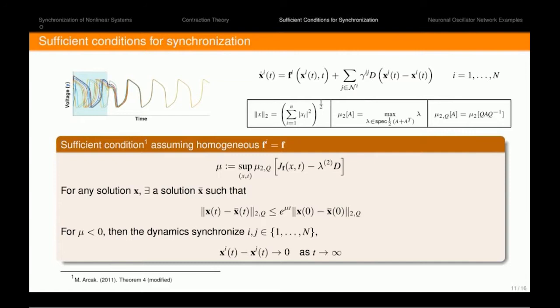So back to the network of the nodes, we can use the same condition, the logarithmic norm induced by a weighted L2 norm of the Jacobian of F minus lambda_2 D, where lambda_2 is again the second eigenvalue of the Laplacian graph. So if this quantity is negative, then we have synchronization.